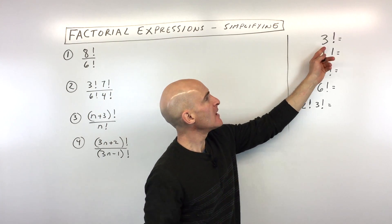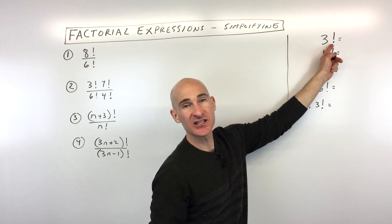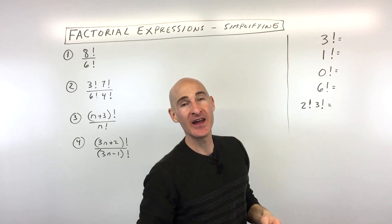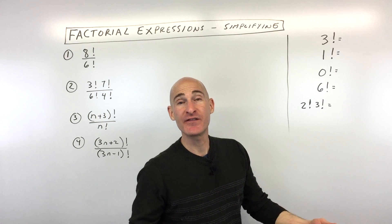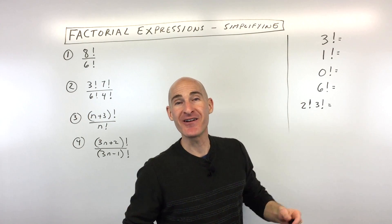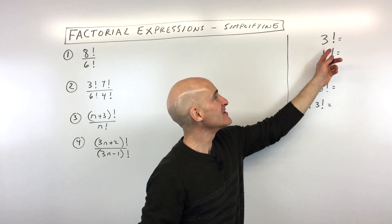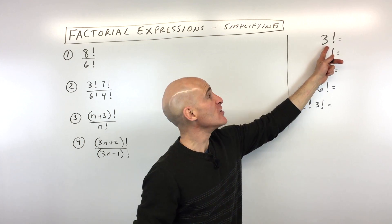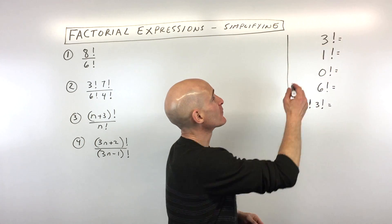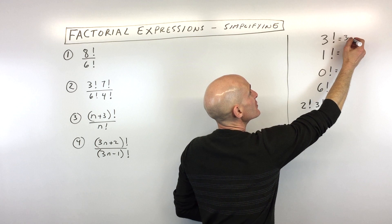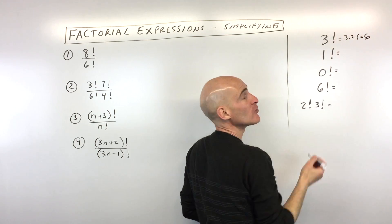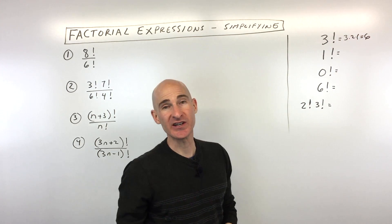What is a factorial? You can see this exclamation point here, or what looks like an exclamation point — that's a factorial. It doesn't mean 'yay, three!' It means you take the number three and multiply it down to one. So for example, three factorial is actually three times two times one, which equals six.